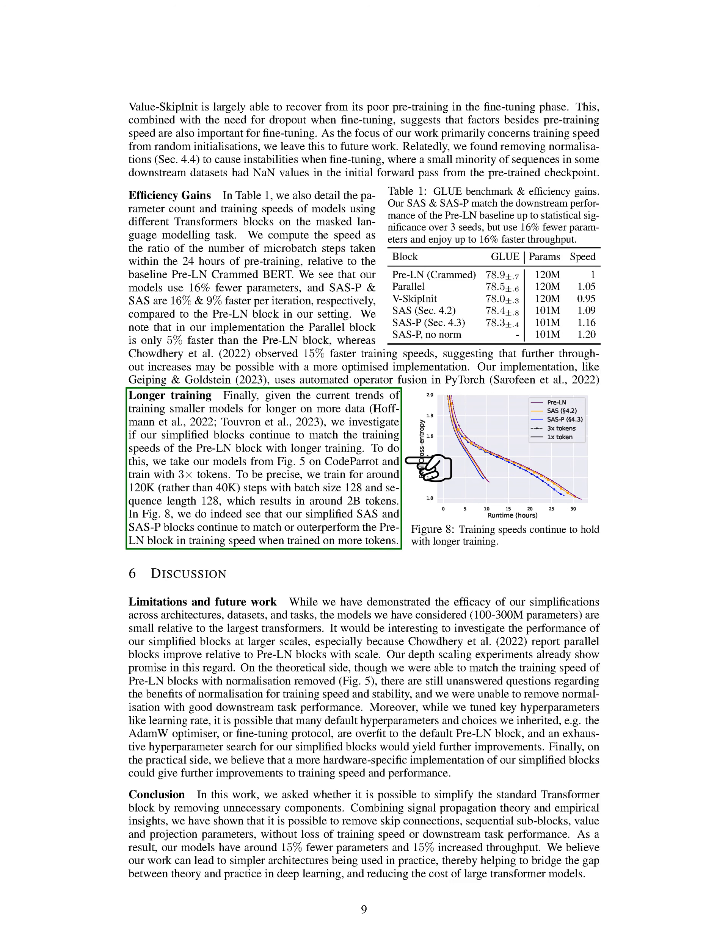Finally, considering the current trend of training smaller models for longer periods on more data, we wanted to see if our simplified blocks could keep up with the pre-LN block's training speeds during longer training periods. We trained our models on CodeParrot with three times more tokens, specifically around 120k steps with a batch size of 128 and sequence length of 128, resulting in around 2 billion tokens. Our simplified SAS and SAS-P blocks continued to match or outperform the pre-LN block in training speed when trained on more tokens.